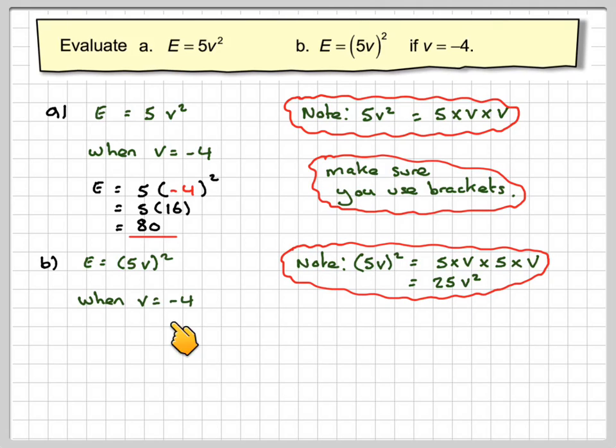So when V is equal to minus 4, we've got E is equal to (5 times minus 4) all squared. So in brackets means do first. 5 times minus 4 is minus 20, so we've got (minus 20) squared.